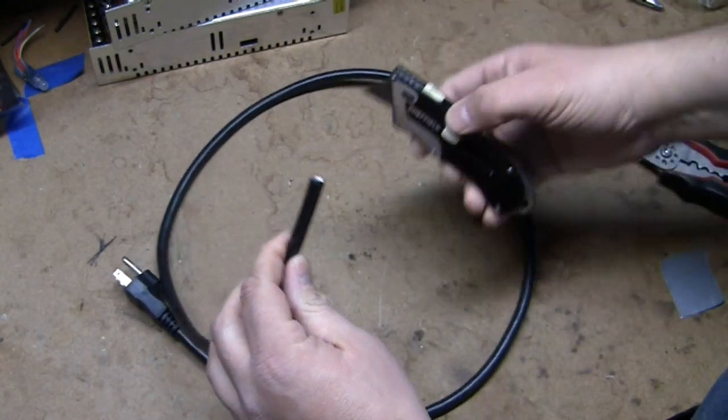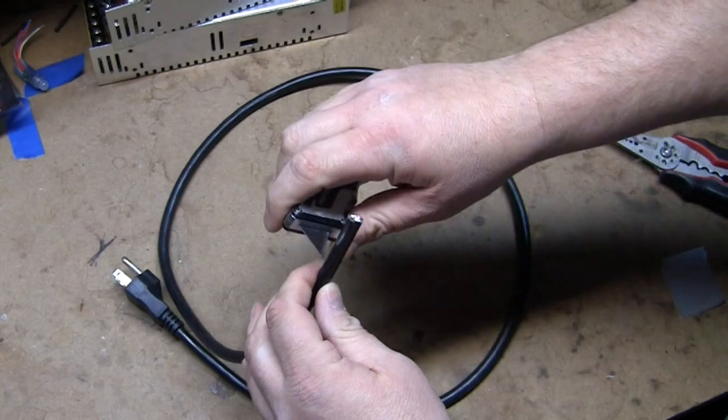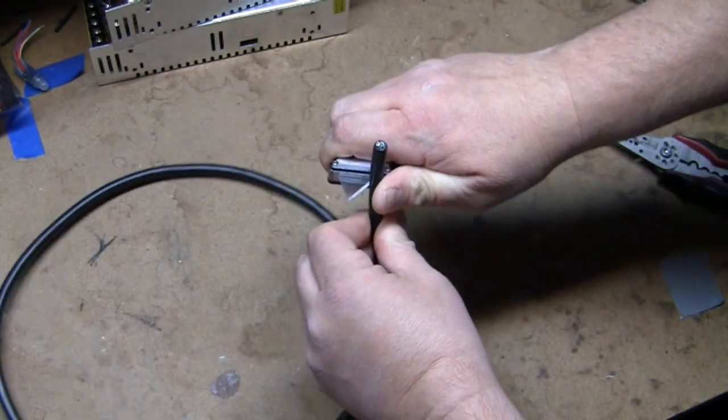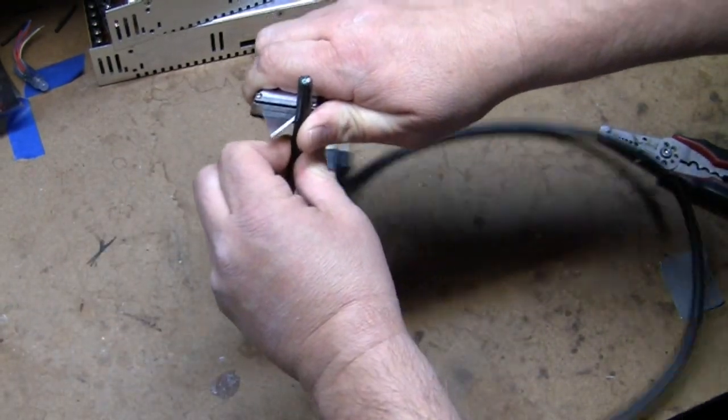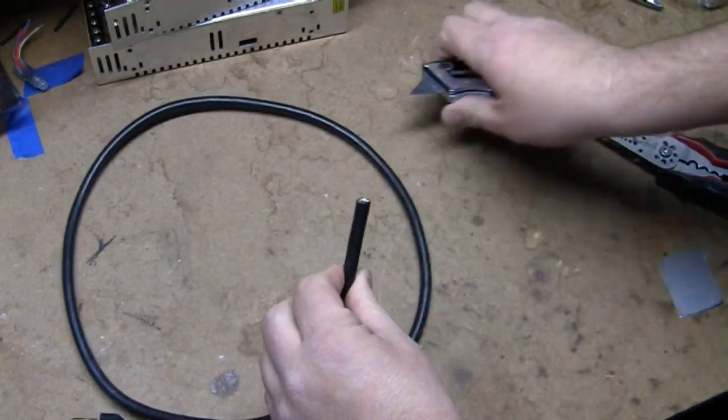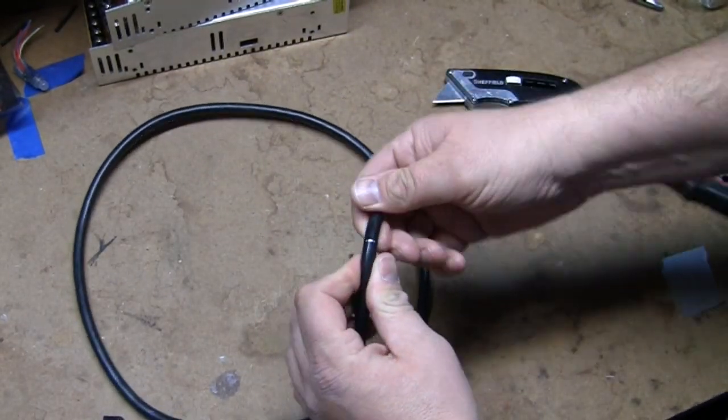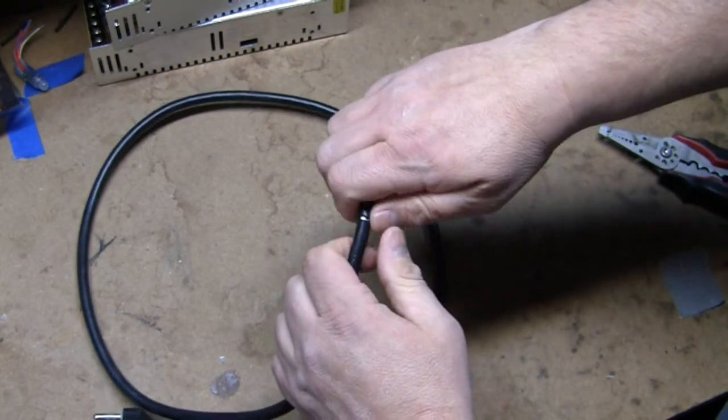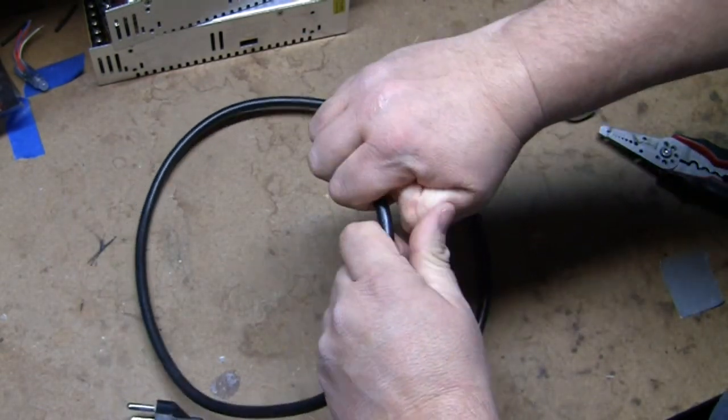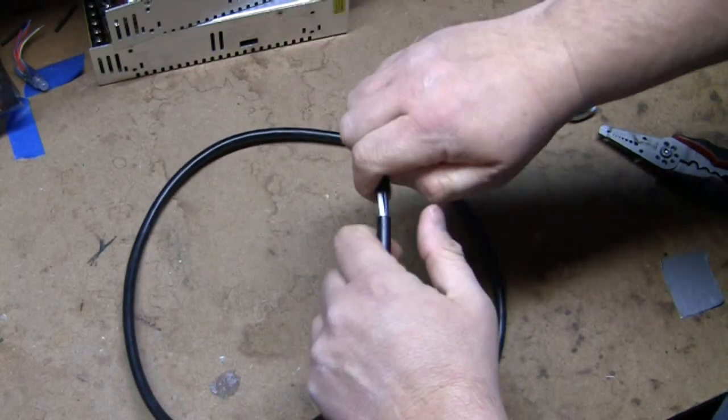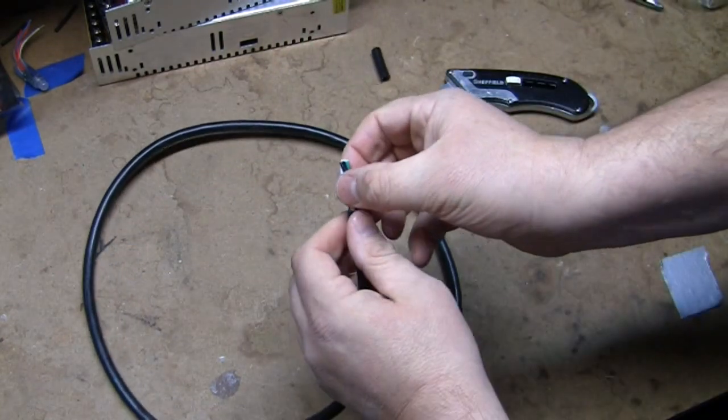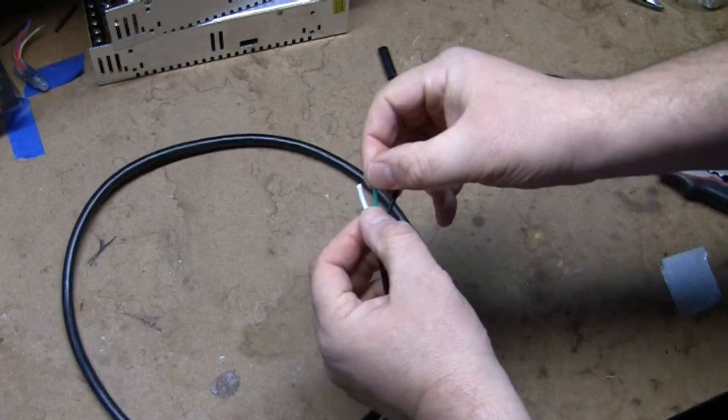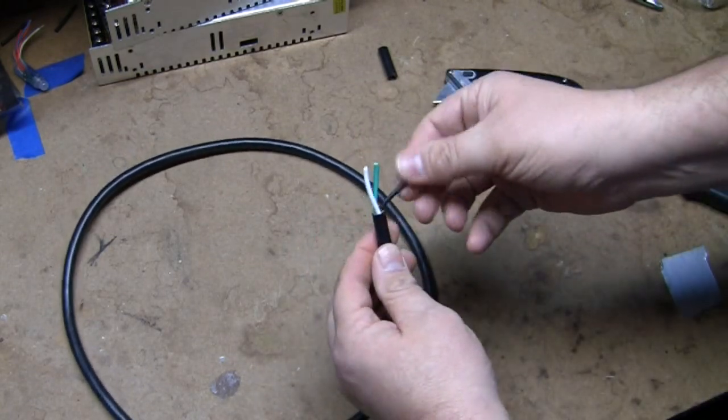I'm going to take my knife and slowly score the sheath to make a small cut inside. I want to then bend the sheath to expose the wire and the sheath should be able to slide off, thus exposing the three wires I need to prep.